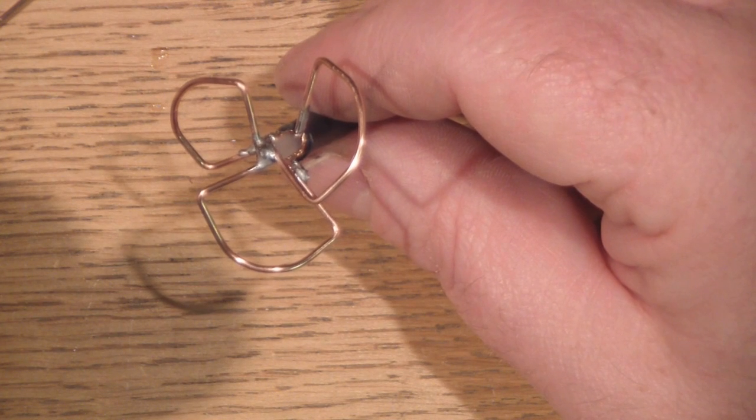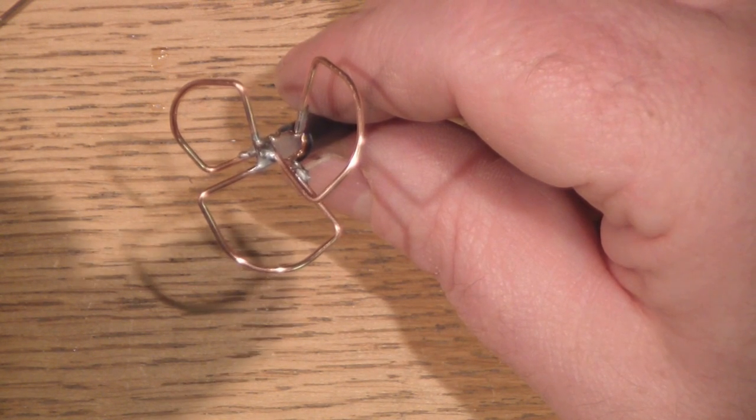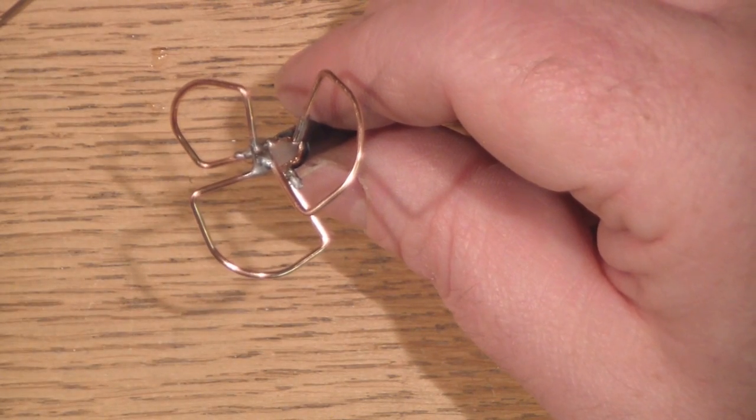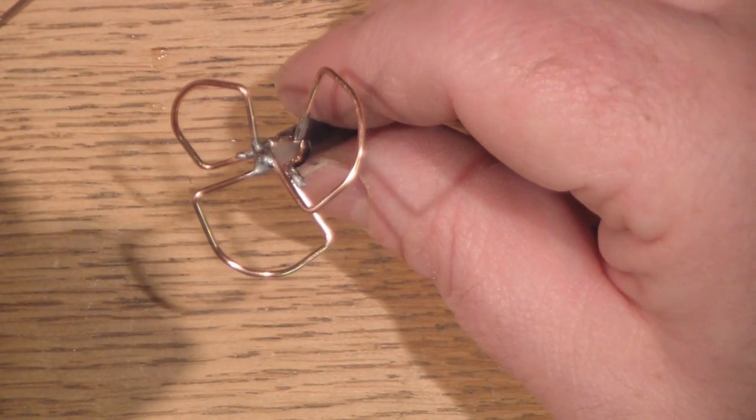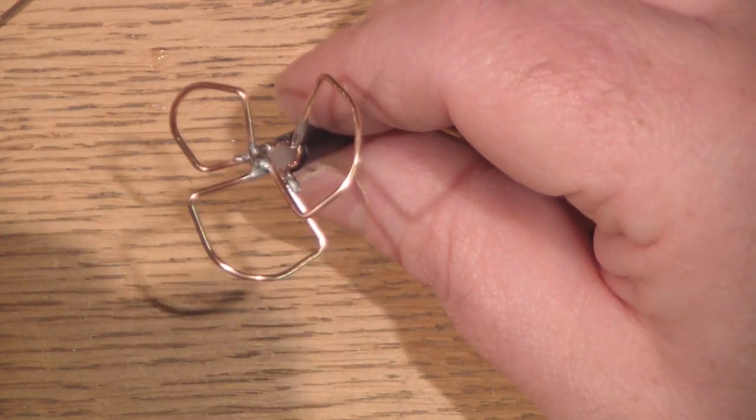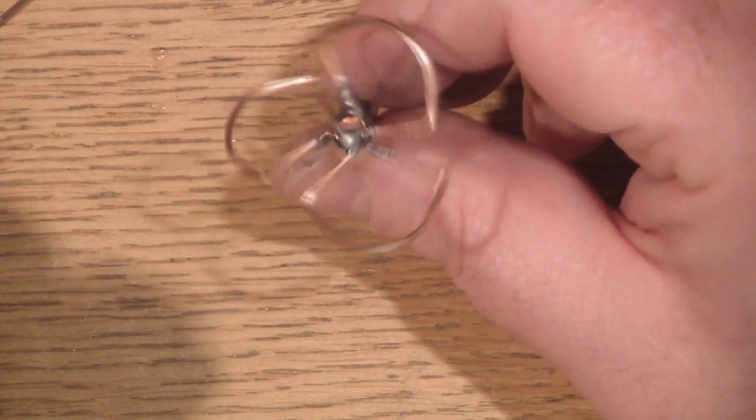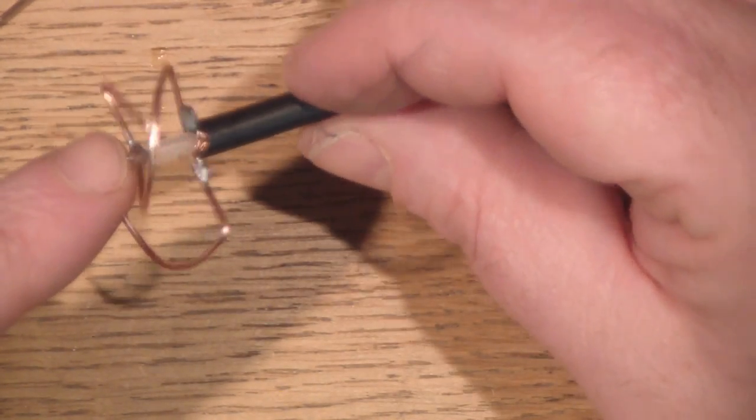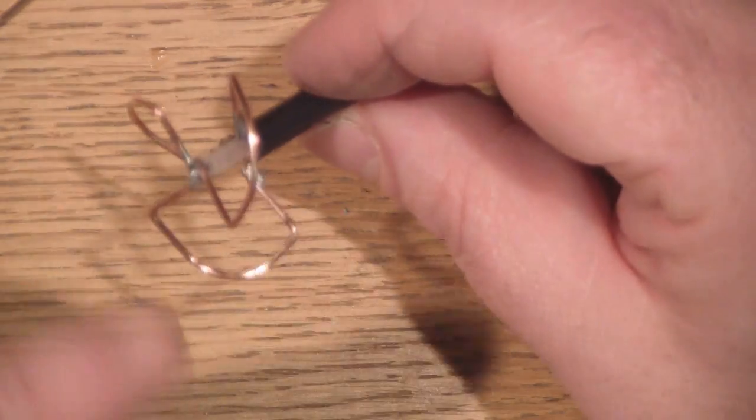This is the final video in the series of three videos for the FPV setup. We're looking at the transmitter antenna and building a 5.8 gigahertz cloverleaf antenna. This one here is actually one I've just made up to get an idea of the size.